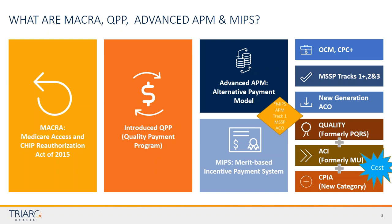MACRA is the Medicare Access and CHIP Reauthorization Act, passed in 2015. The Quality Payment Program is part of MACRA and is broken into Advanced APMs and MIPS. Most of us are participating in MIPS. There's also a pocket of folks considered MIPS APM clinicians — those are the folks in Track 1 MSSPs, who live in both worlds. The ACO reports quality and CPIA for them, and those MIPS APM clinicians are responsible for the ACI portion only.